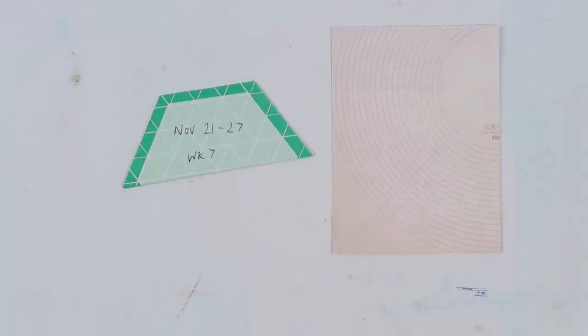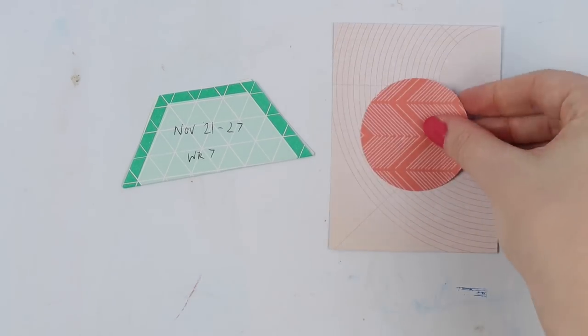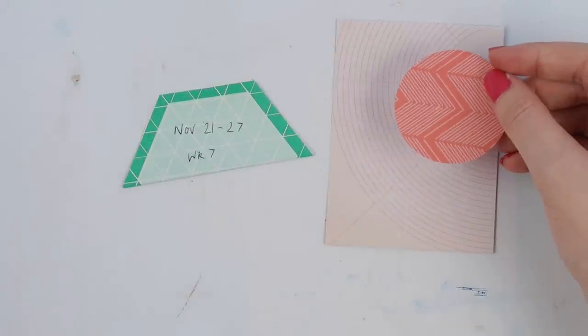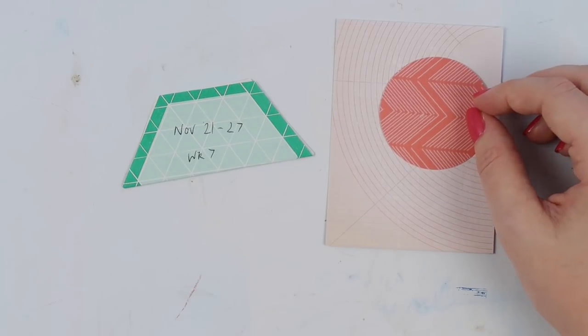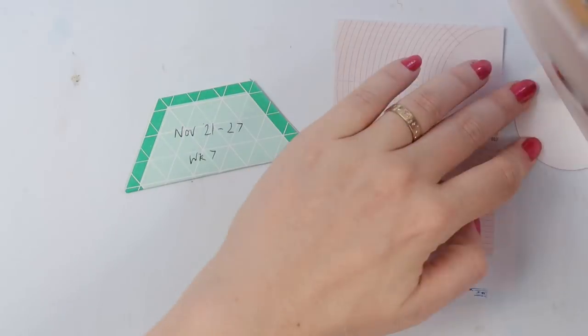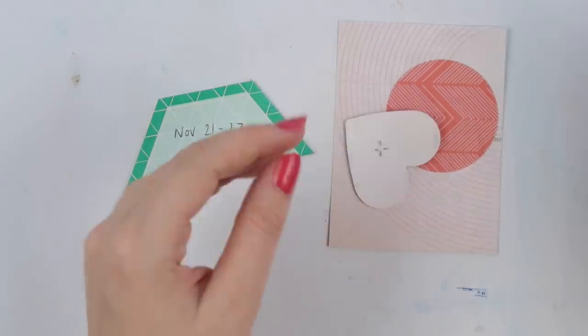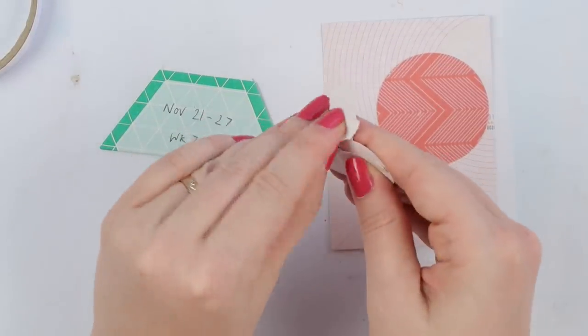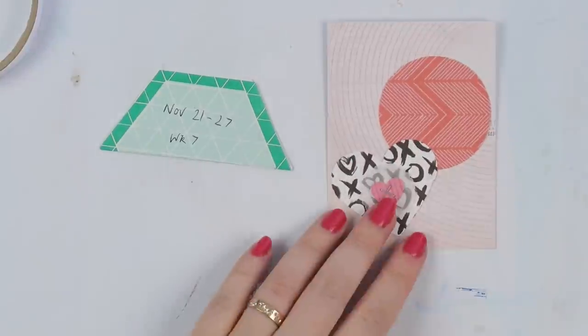This is just a piece of paper from a paper pad that I've cut up. It's a good way if you're using some pattern paper and you have a scrap that's big enough to make a three by four card. Instead of saving the whole piece of paper to put in your scraps box, it's a really good idea to cut as many three by four cards as you can from the piece of paper and then put the leftover bit in your scrap box.